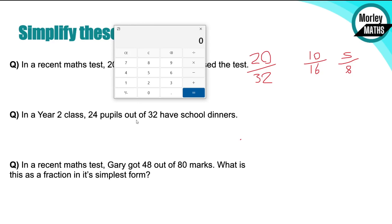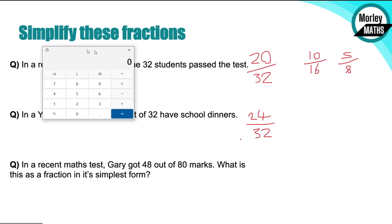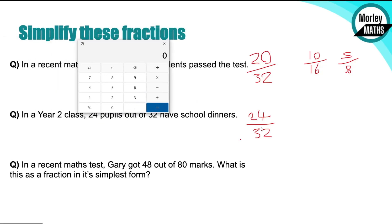It says in a Year 2 class, 24 pupils out of 32 have school dinners. So what's that as a simplified fraction? So again, we'll start off with 24 out of 32. Can we try and divide both of those by 24? Well, we know 32 is not a multiple of 24, so we can't do the first method. So can we turn this into a decimal? We actually can, and we've got 0.75.